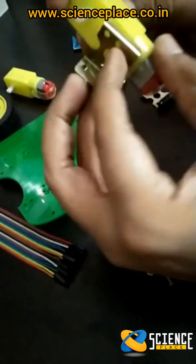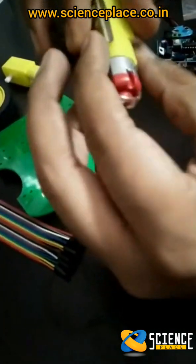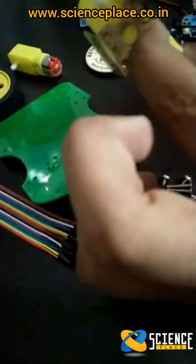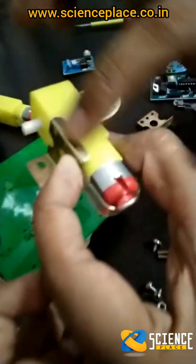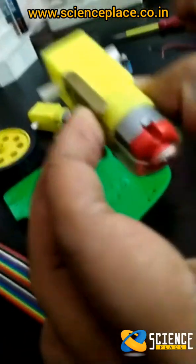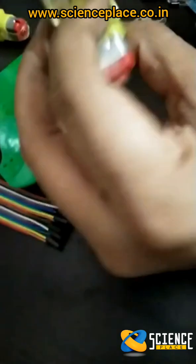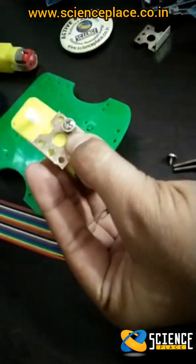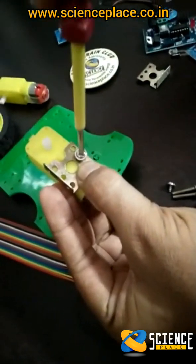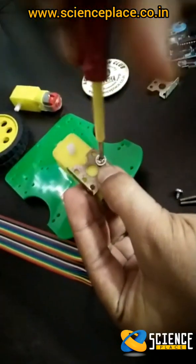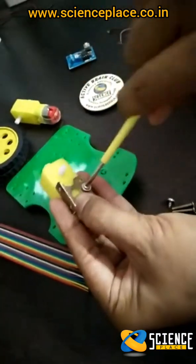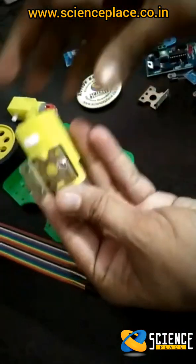And this smaller screw I will take and I'll fix like this in this hole. You can see now only one smaller screw is enough. So now it is done, now it is fixed.